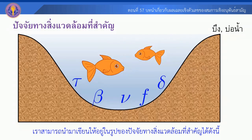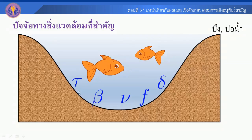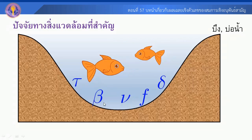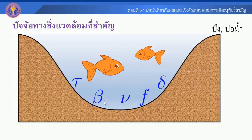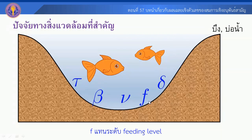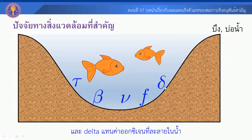It is possible to write the model incorporating environmental parameters: Tau, Beta, BOD (biochemical oxygen demand), Ammonia, and F (feeding level), where Delta represents the dissolved oxygen level affecting fish growth.